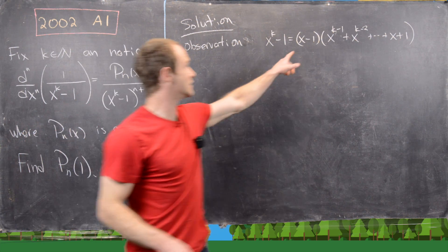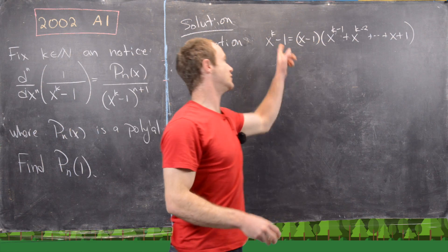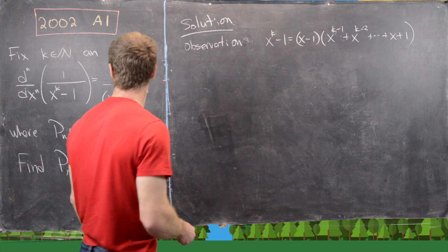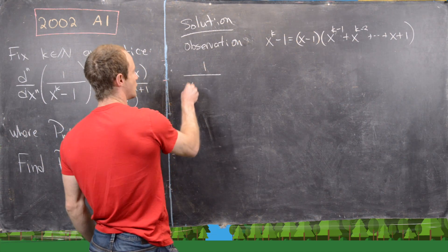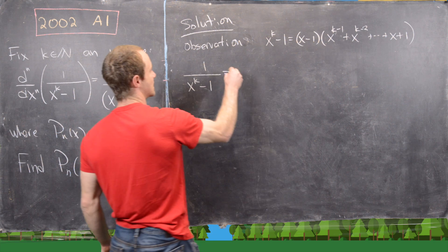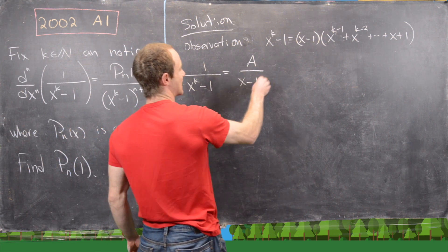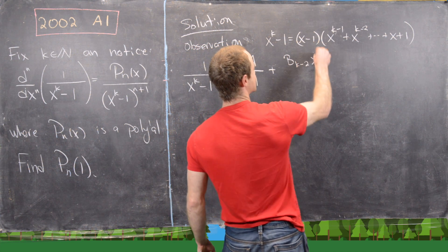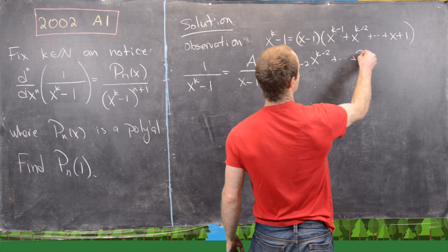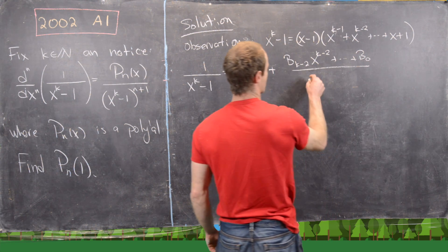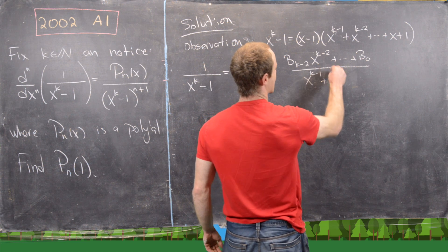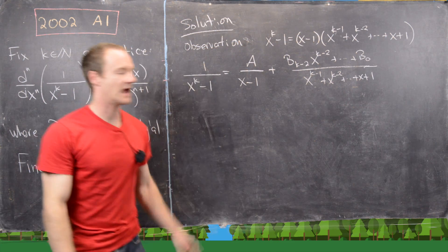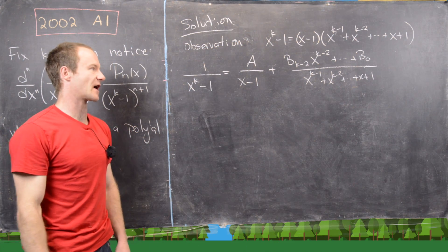If you multiply it out you end up back with x^k minus 1 — this is a standard factorization. Now we're going to use that to take 1 over x^(k-1) and write it as a over (x minus 1) plus b_(k-2) x^(k-2) all the way down to b_0, all over (x^(k-1) plus x^(k-2) all the way down plus x plus 1). In other words, we're doing a partial fraction decomposition.